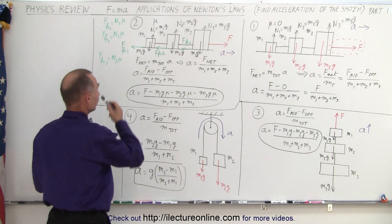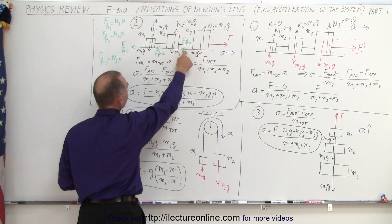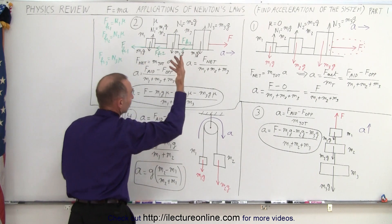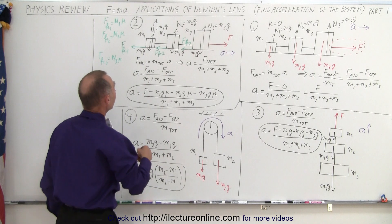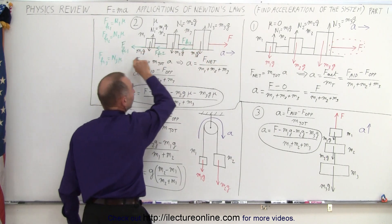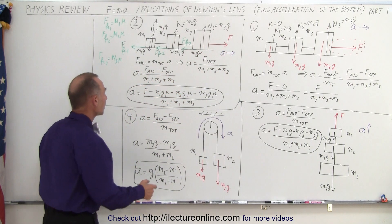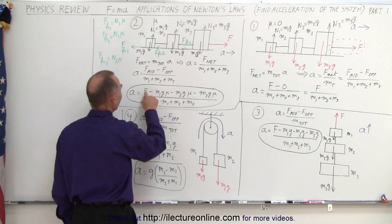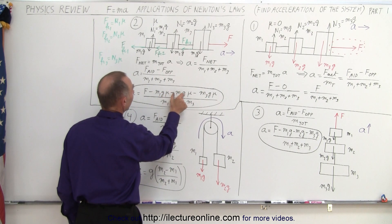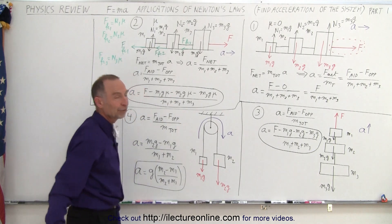What if there's friction? Then there's going to be a friction force on the first mass, a friction force on the second mass, and a friction force on the third mass. By definition, the friction force equals the normal force times mu. Assuming the same material and same floor, all three friction forces point in the opposite direction of acceleration. So the acceleration equals F minus the three friction forces — M1g times mu, M2g times mu, M3g times mu — divided by the total mass.